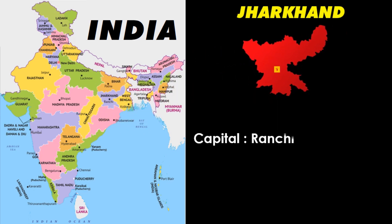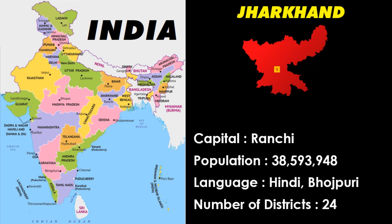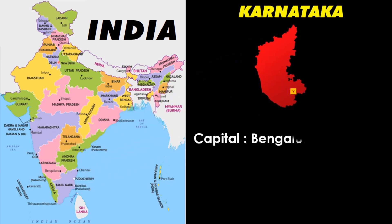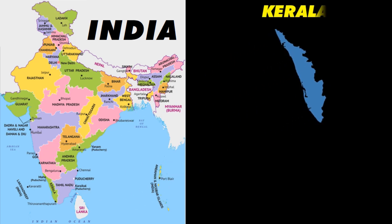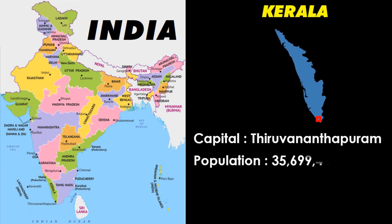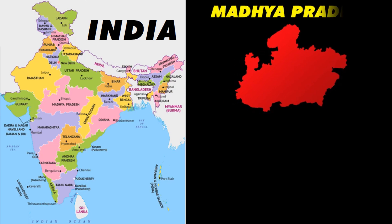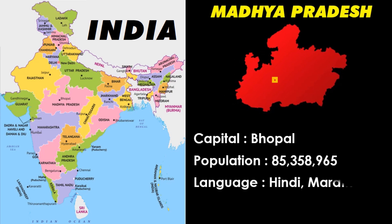Jharkhand: capital Ranchi, language Hindi and Bhojpuri. Karnataka: capital Bengaluru, language Kannada. Kerala: capital Thiruvananthapuram, language Malayalam. Madhya Pradesh: language Hindi and Marathi.